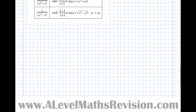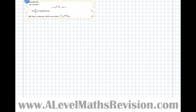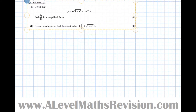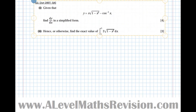Now let's look at an exam question to put this into context. I've taken this from an OCR paper, but it equally applies to Edexcel, AQA, and MEI. Given that y equals x√(1 − x²) − arccos x, find dy by dx in simplified form.